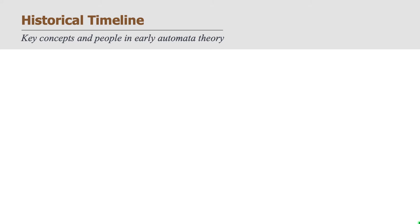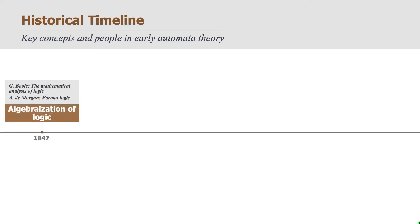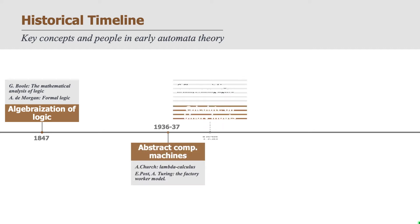In fact, the foundations were already laid in the 19th century with contributions from Boole and De Morgan. What they essentially did was a sort of algebraization of logic, allowing operations with logical statements. This was crucial, for example, for the work done by Claude Shannon on switching circuits, where the objective was to develop a computing machine that would calculate on binary inputs. This was done around 1938.